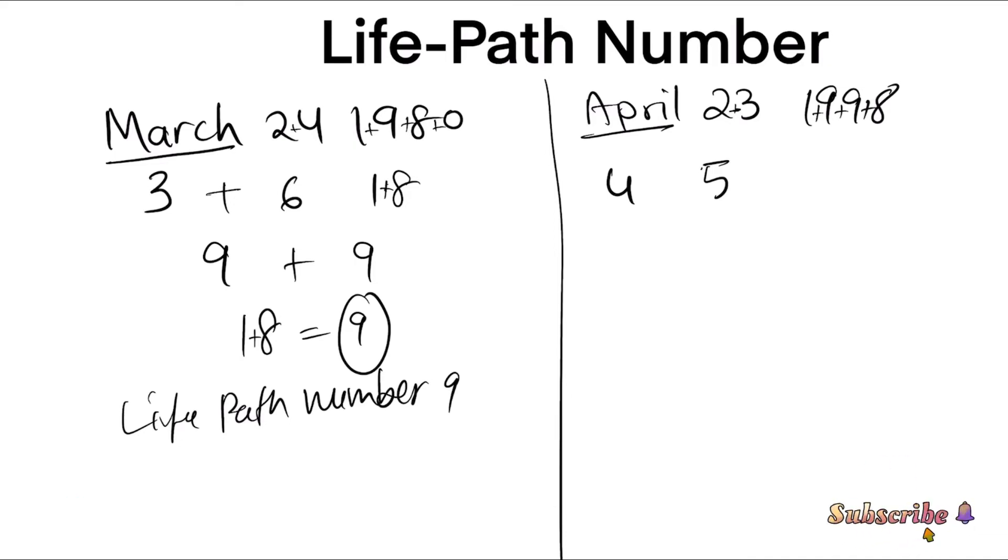This equals 27. 2 plus 7 is 9. Then 4 plus 5 plus 9. 9 plus 9 is 18. 1 plus 8 equals 9.